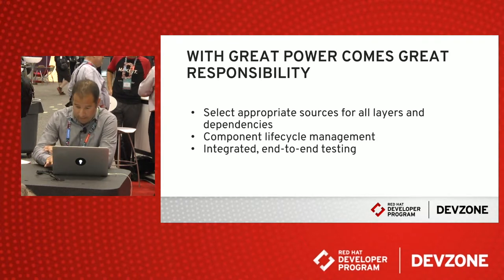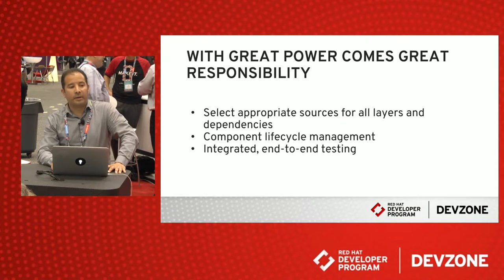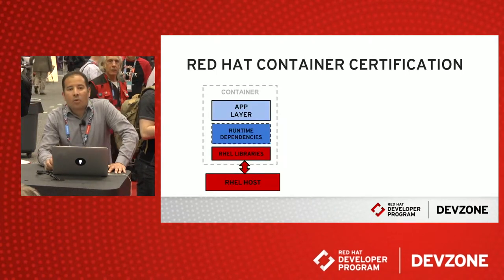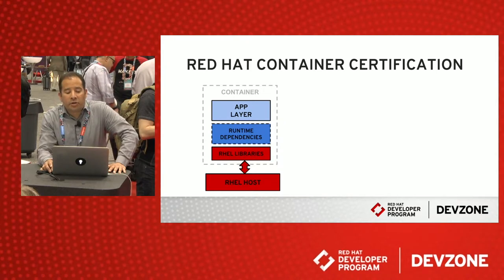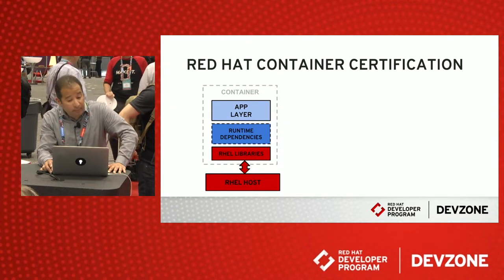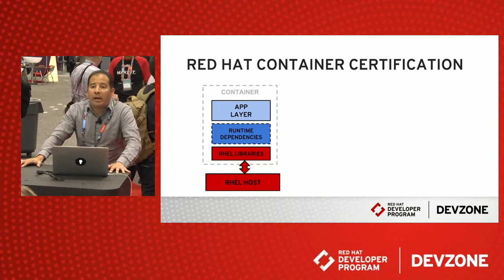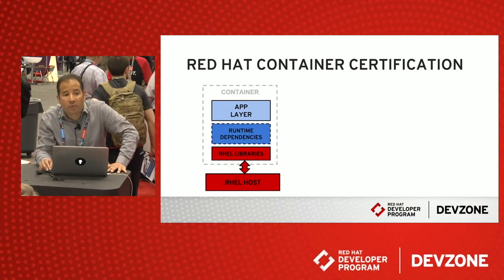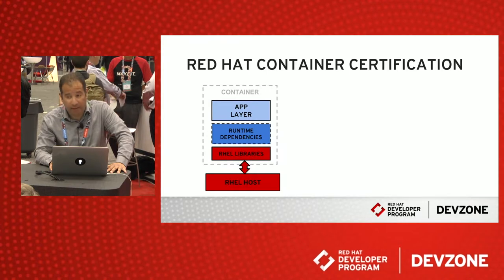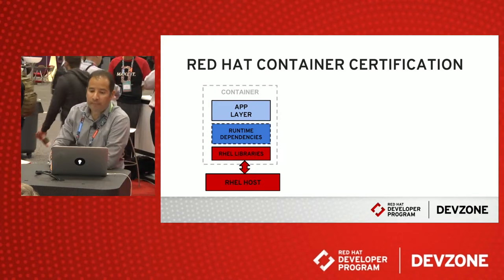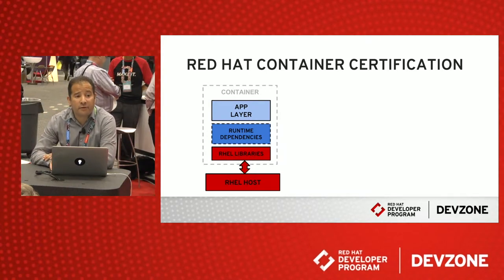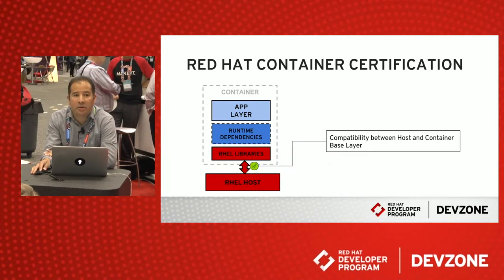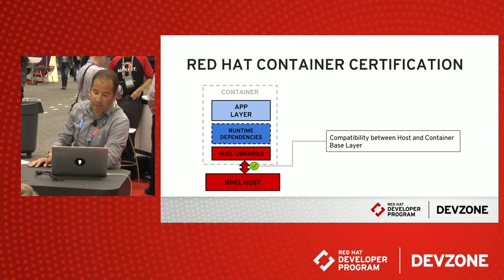This increases some of the work on the application provider, and Red Hat is doing some things to help here. We are launching a Red Hat container certification, and this is the way Red Hat collaborates with commercial software providers to check that things are ready to be run in a production environment. This is a free service for software partners, and we try to help you build and maintain containers that can be trusted in a production environment.